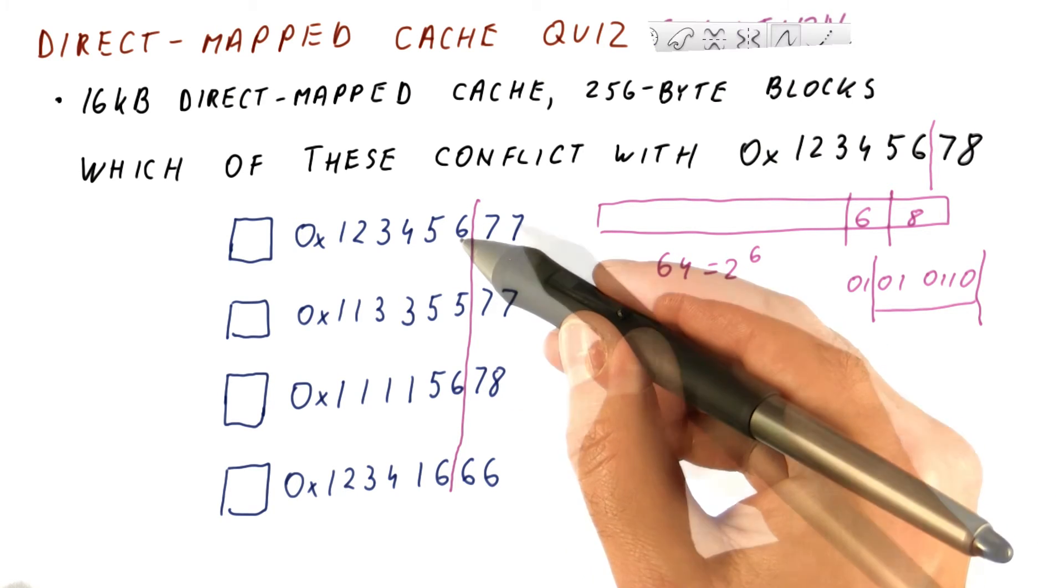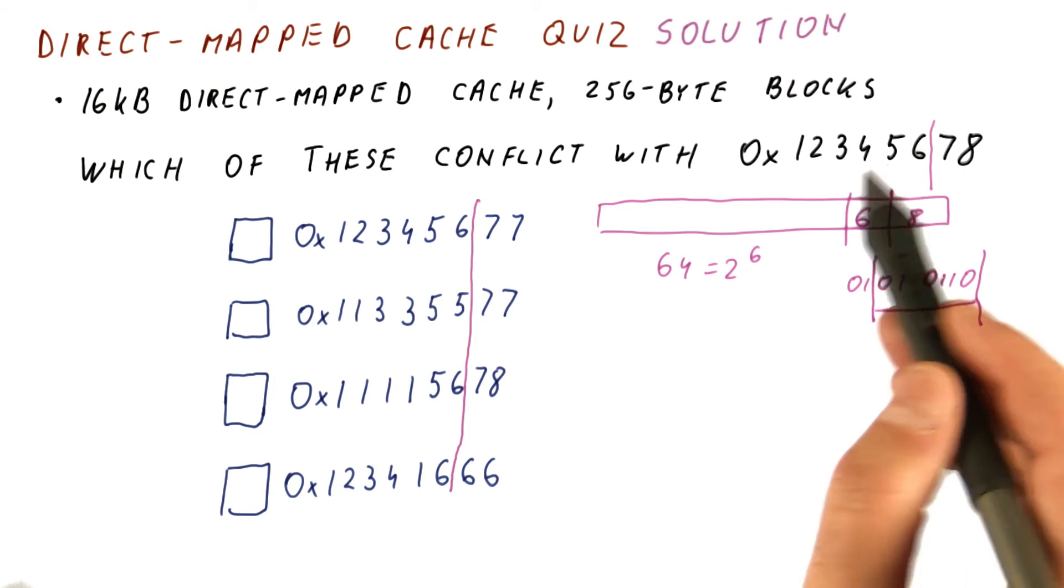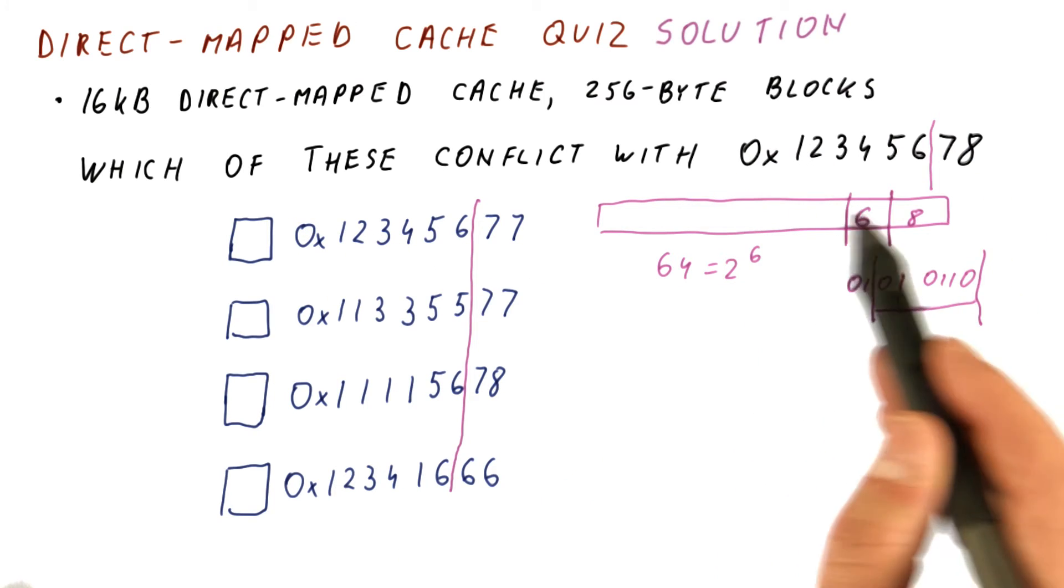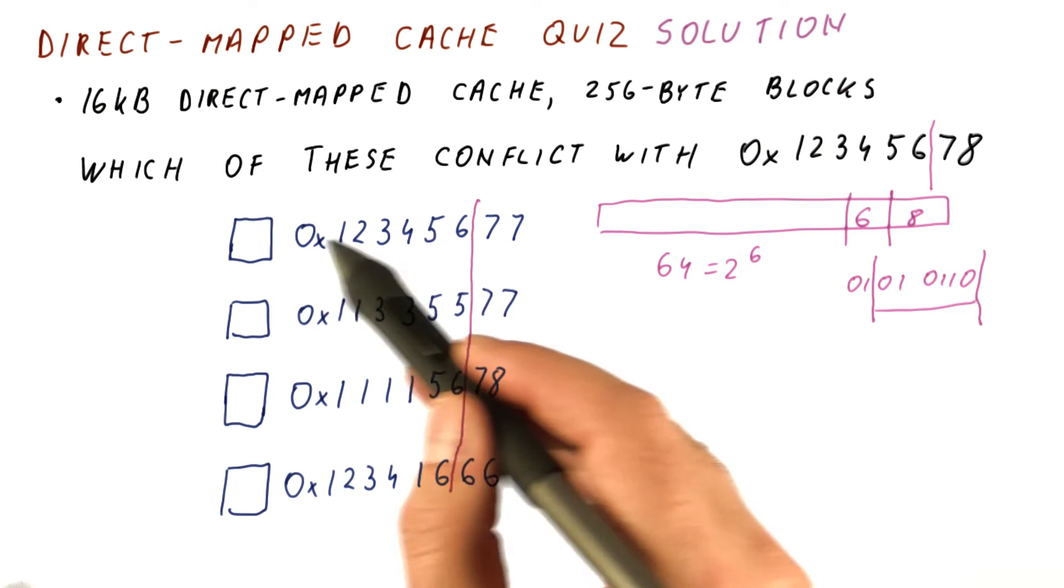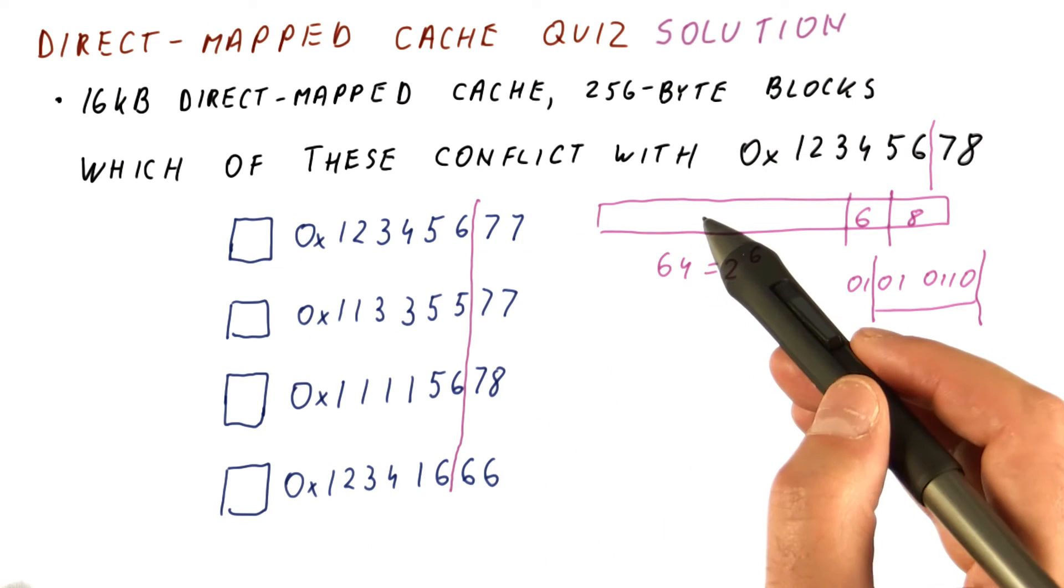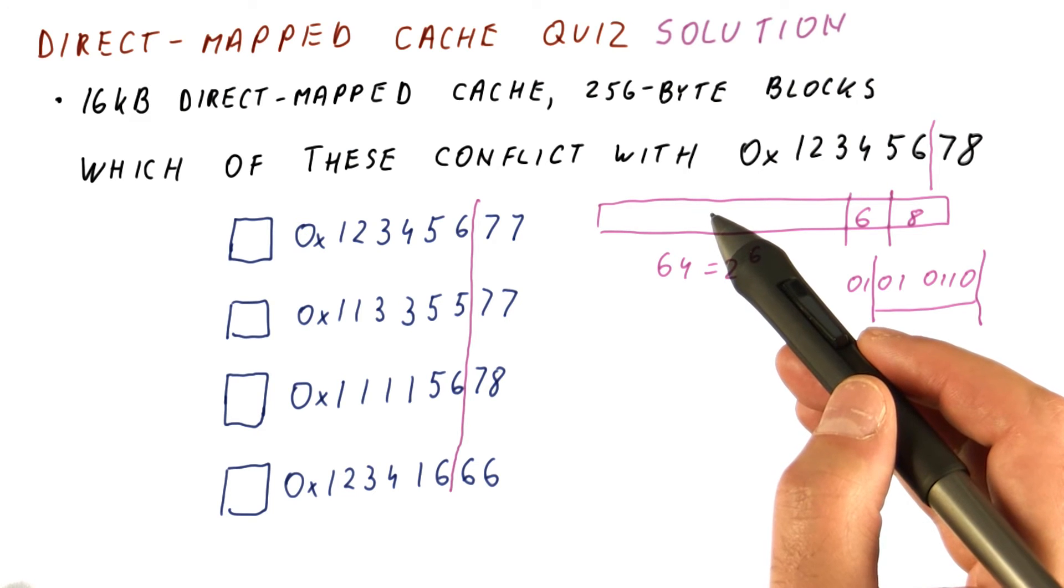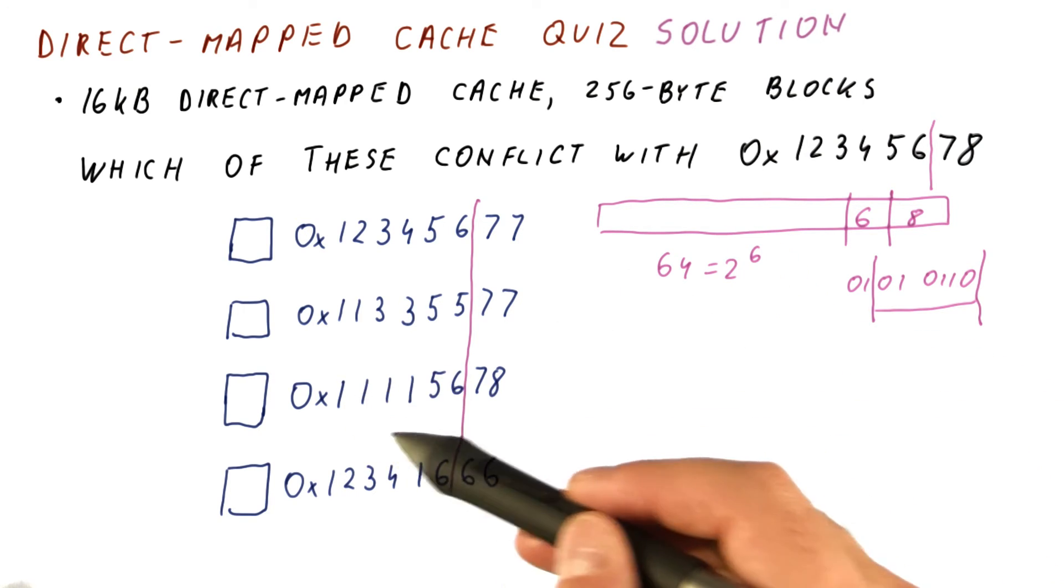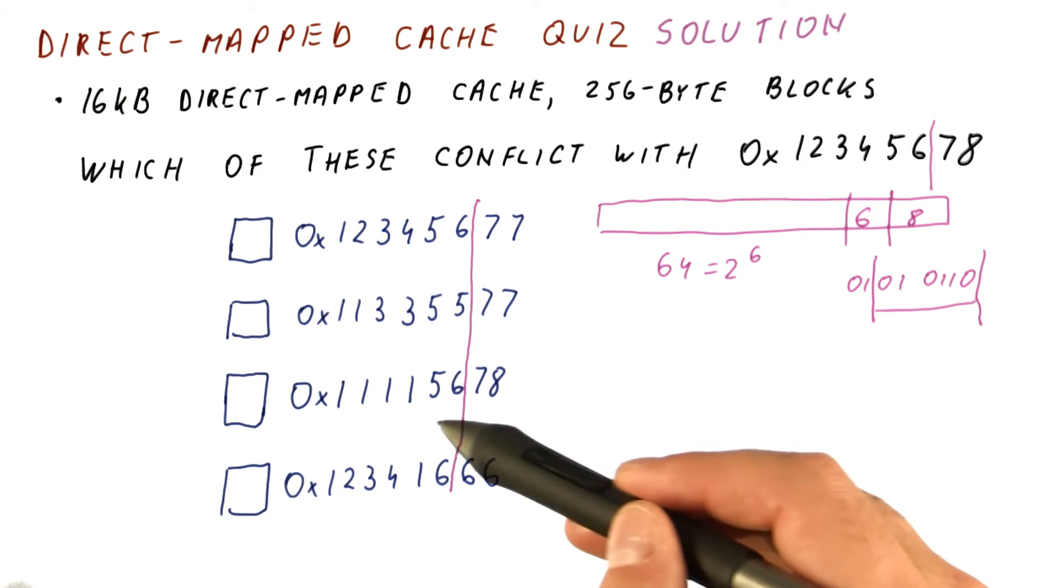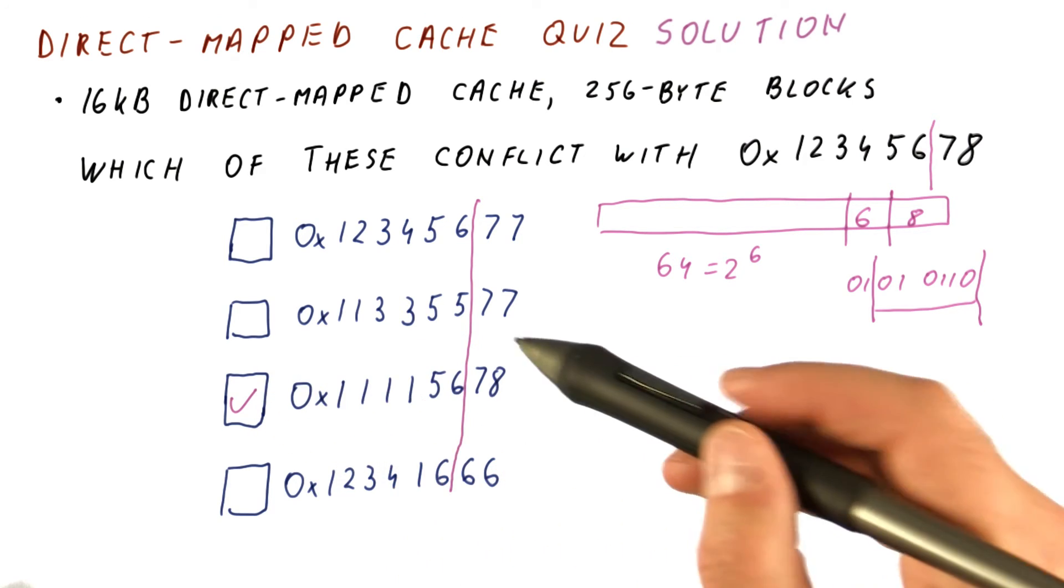But in order to actually have a conflict, it needs to be a different block. This address here does not conflict with this one here because they're actually in the same block. They have the same block number, so this is not a conflict. They do map to the same place in the cache, but they're actually the same block, so it's not a conflict among blocks. This, however, is a different block number that definitely maps to the same index. So this is a conflict.